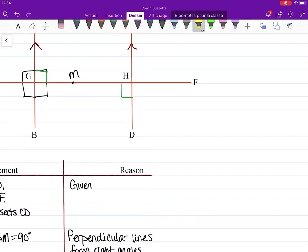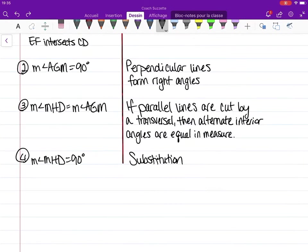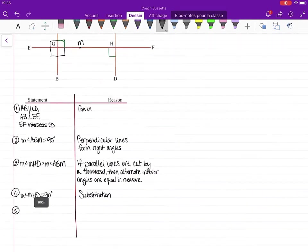Well, but if a right angle is formed from the intersection of two lines, then those lines must be perpendicular. That's the definition of perpendicular. So our last statement and reason will be that CD is perpendicular to EF.